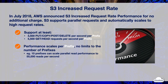S3 performance scales per object prefix, and there are no limits to the number of prefixes. You can increase your read or write performance by parallelizing reads. For instance, if you create 10 prefixes in an S3 bucket to parallelize reads, you could scale your read performance to 55,000 read requests per second.